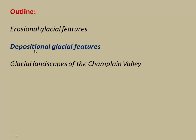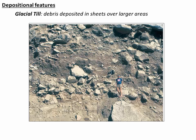Now let's look at depositional features — all this eroded material has to go somewhere. One classic type of glacial deposit is called glacial till, which we've touched on before. It's a very poorly sorted diamict made of very large boulders in a matrix of very fine sand, or even mud and clay. It's poorly sorted because the glacier just plowed it up — no water was involved in the deposition.